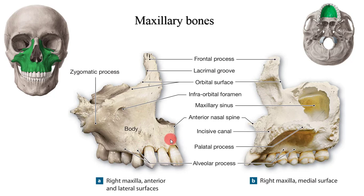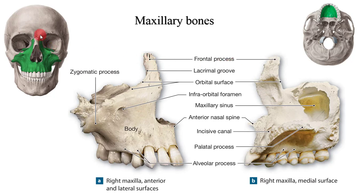The alveolar process is an inferior extension of the maxilla with a rather porous structure. It forms the maxillary dental arch containing eight cavities where the upper teeth are held. Laterally, each maxilla articulates with a zygomatic bone via a zygomatic process. The palatine process is a horizontal extension on the medial side of the bone, constituting the roof of the mouth and the floor of the nasal cavity. Together with the palatine bone, it forms the hard palate. The united maxillae form a prominent anterior nasal spine along the inferior surface of the nasal cavity. Superiorly, the maxilla articulates with the frontal bones via frontal processes. The incisive foramen can be found on the median line just posteriorly to the incisor teeth, where the nasopalatine nerve and greater palatine vessels pass through.